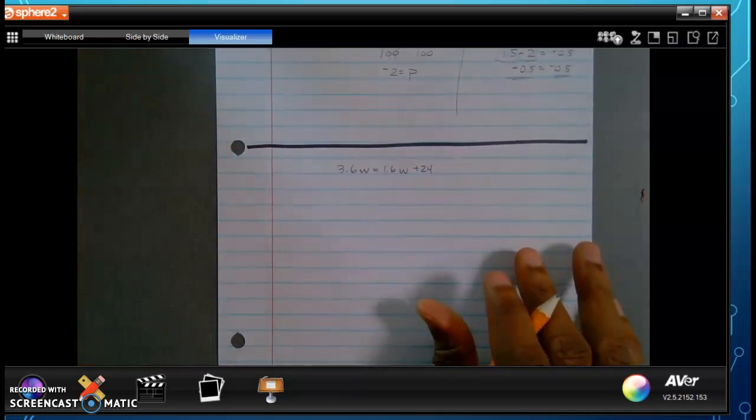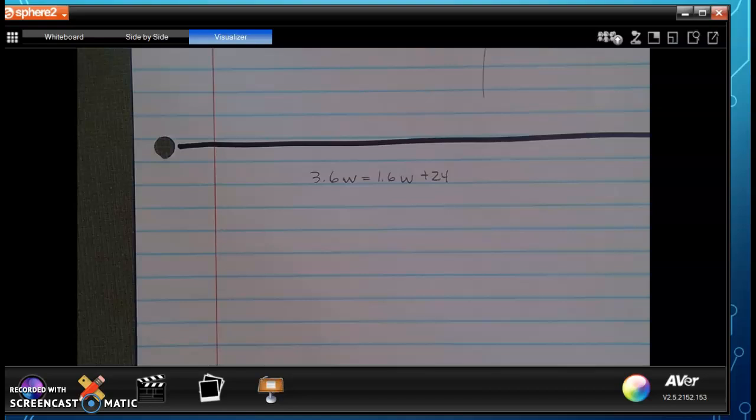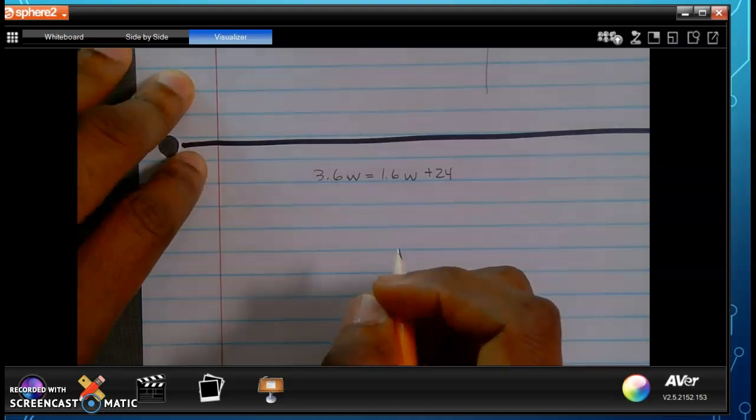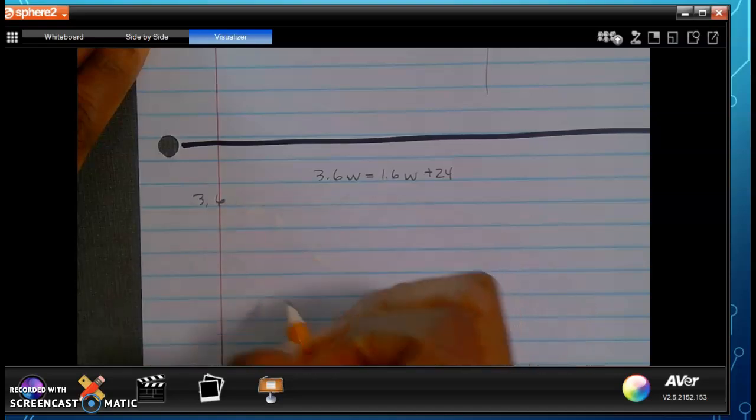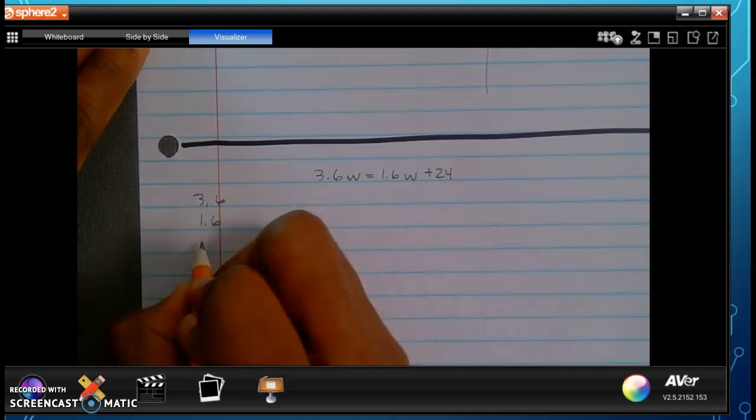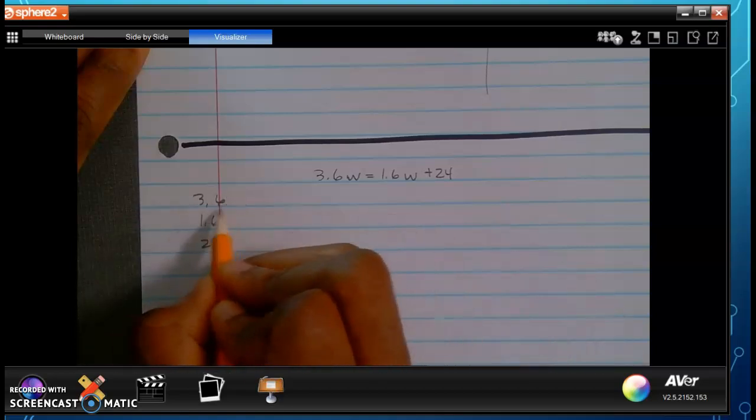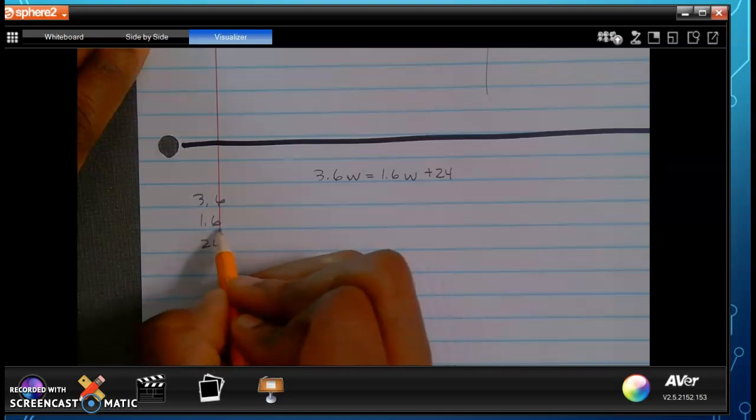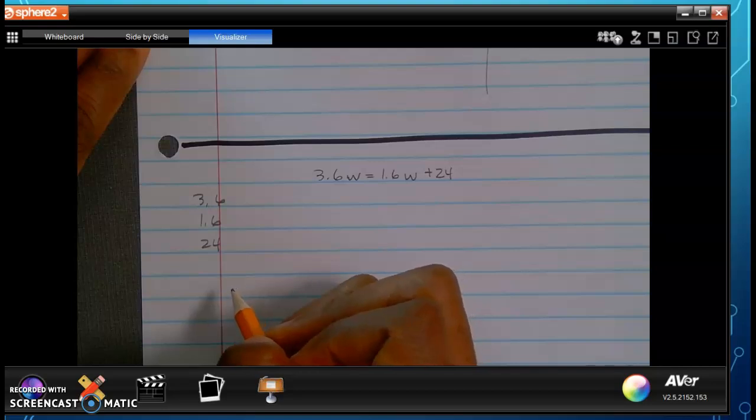Now, moving on to one that may look a little bit simpler. You might ask yourself, because I have 3.6w and 1.6w, you may be able to see something that you can do automatically. But let's go ahead and practice the skill that we learned here. So, again, I have decimals 3.6 and decimals 1.6 and whole number 24. What is the greatest number that I need to move all of these in order to make a whole number? I don't have to move this one anywhere. I'm going to move this one one to make a whole number.